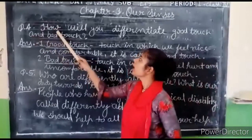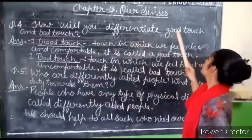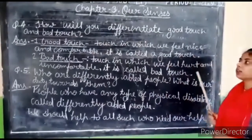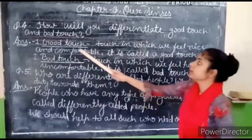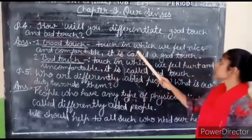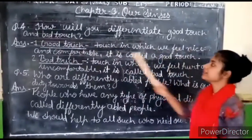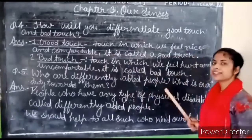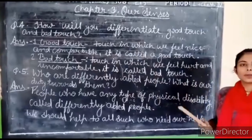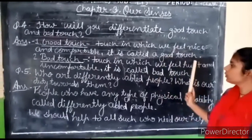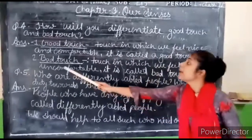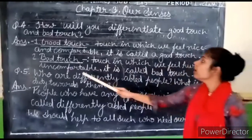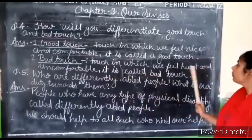Question number 4: How will you differentiate good touch and bad touch? Good touch is the touch in which we feel nice and comfortable — it is called a good touch. Bad touch is the touch in which we feel hurt and uncomfortable — it is called bad touch.